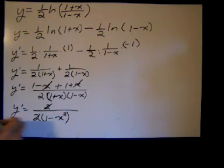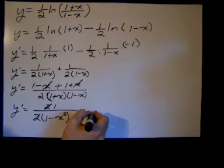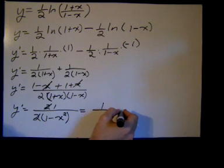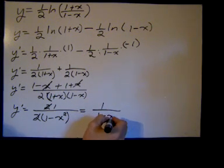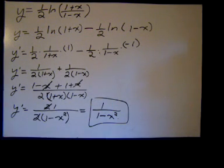And then a little bit more simplification, you can cross out those twos, and we get y prime equals one over one minus x squared. Much easier form. Looks sweeter than that, I think. So, thanks.